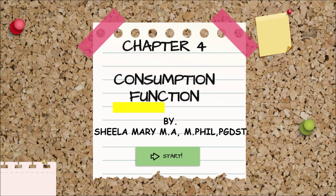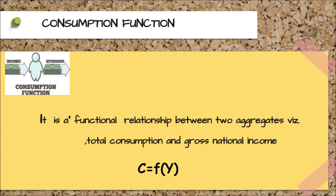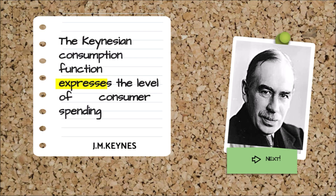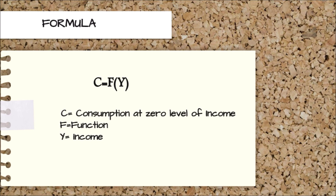Today let's discuss the topic called the consumption function. The consumption function refers to the use of goods and services by households. In economics, it describes the relationship between consumption and disposable income. The concept was introduced into macroeconomics by J.M. Keynes in 1936. It is a functional relationship between two aggregates: total consumption and gross national income — essentially a relationship between consumption expenditure and income.